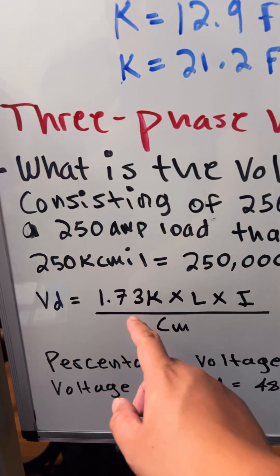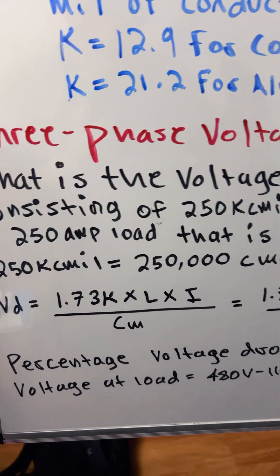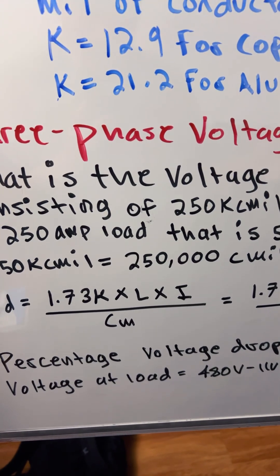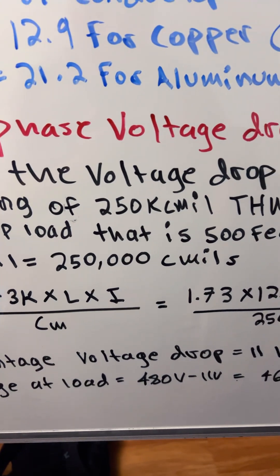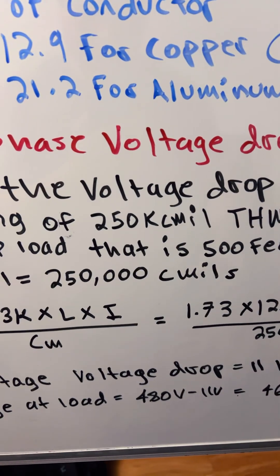1.73, which is square root of 3, times K times L times I divided by CM, which is your circular mills.